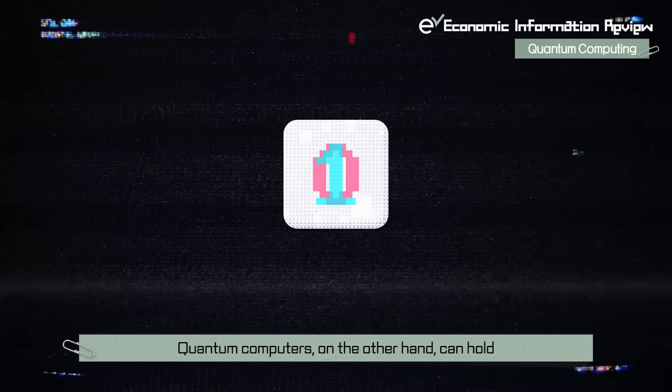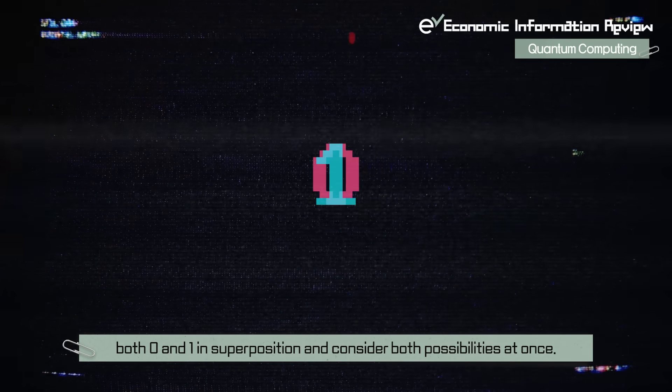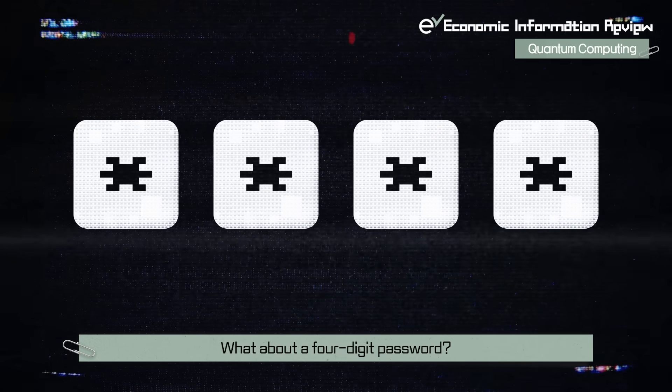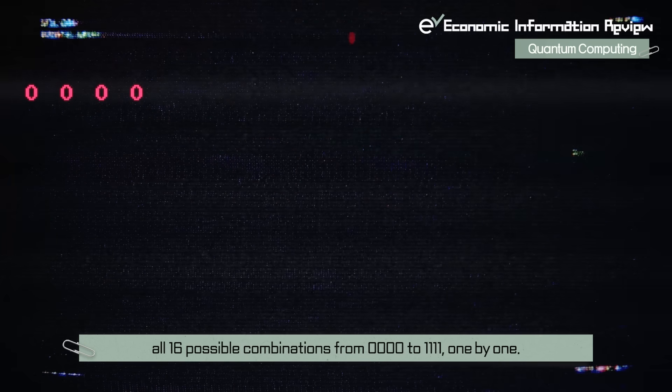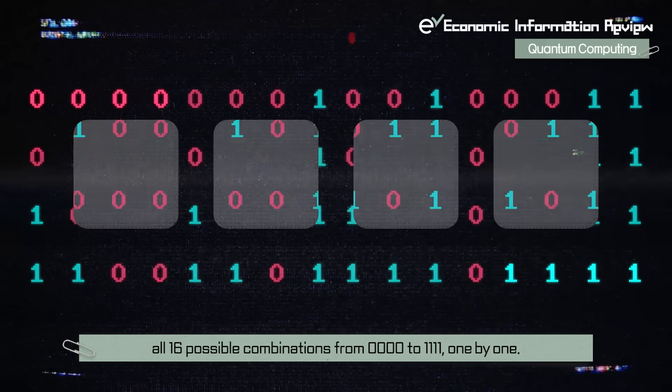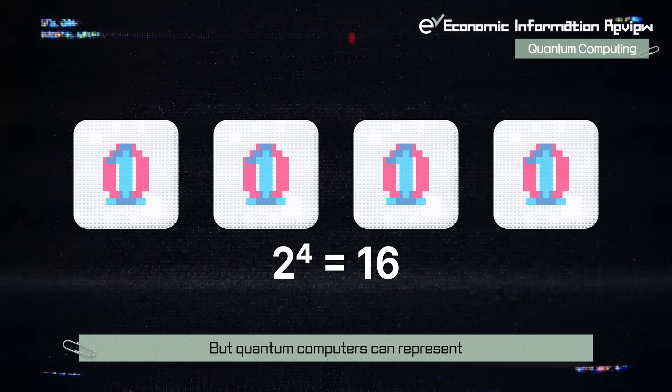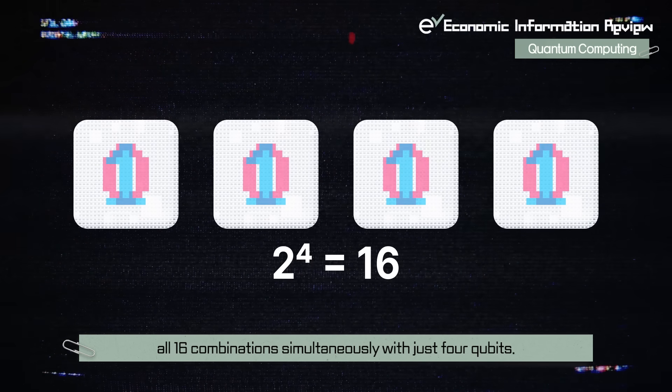Quantum computers, on the other hand, can hold both 0 and 1 in superposition and consider both possibilities at once. What about a four-digit password? Classical computers would have to go through all 16 possible combinations from 0000 to 1111 one by one. But quantum computers can represent all 16 combinations simultaneously with just 4 qubits.